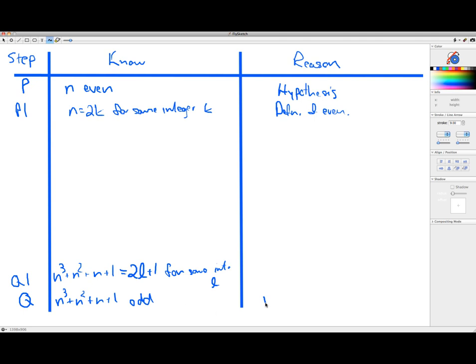So if I prove Q1, then Q follows because that would be the definition of odd. So all this seems to gravitate around n cubed plus n squared plus n plus 1. So why don't I take P2 and compute that quantity? My next forward step. So n cubed plus n squared plus n plus 1 is equal to, I'll just slap these in parentheses here. Since n is equal to 2k, I can just substitute it. Plus 2k squared plus 2k plus 1. And this is just substitution.